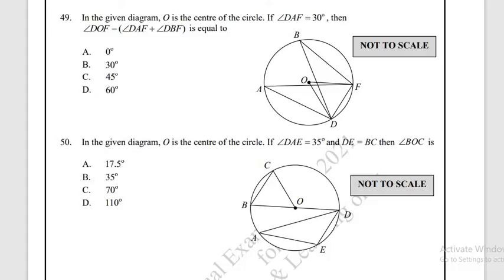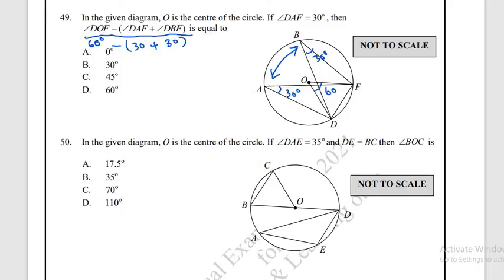Question number 49: O is the centre of the circle. Angle DAF = 30°. The central angle DOF = 2 × 30° = 60°. Angle DBF = 30° because it is in the same segment as DAF. The total expression evaluates to 0. The correct answer is option A.